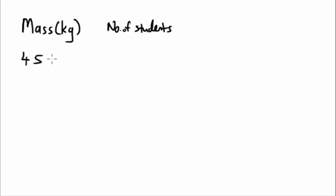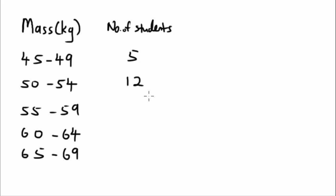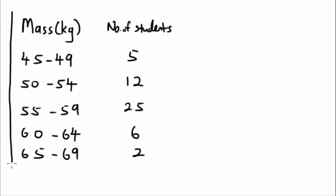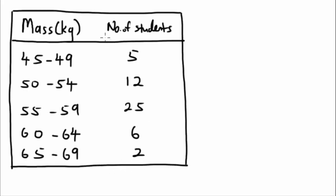We have five classes: 45 to 49, 50 to 54, 55 to 59, 60 to 64, and 65 to 69 kilograms. The number of students in each class are 5, 12, 25, 6, and 2 students respectively. This is the grouped data we are working with.